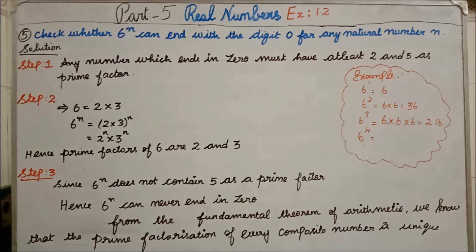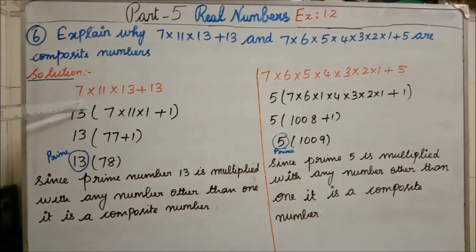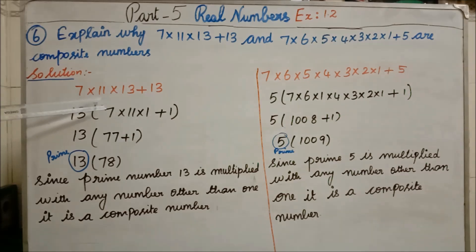Now we will see the 6th question. Explain why 7 × 11 × 13 + 13 and 7 × 6 × 5 × 4 × 3 × 2 × 1 + 5 are composite numbers. We want to explain that these two numbers are composite numbers. After writing the number, the first thing is to see which number is commonly repeated. Looking at 7 × 11 × 13 + 13: 13 appears twice, so the common number is 13.